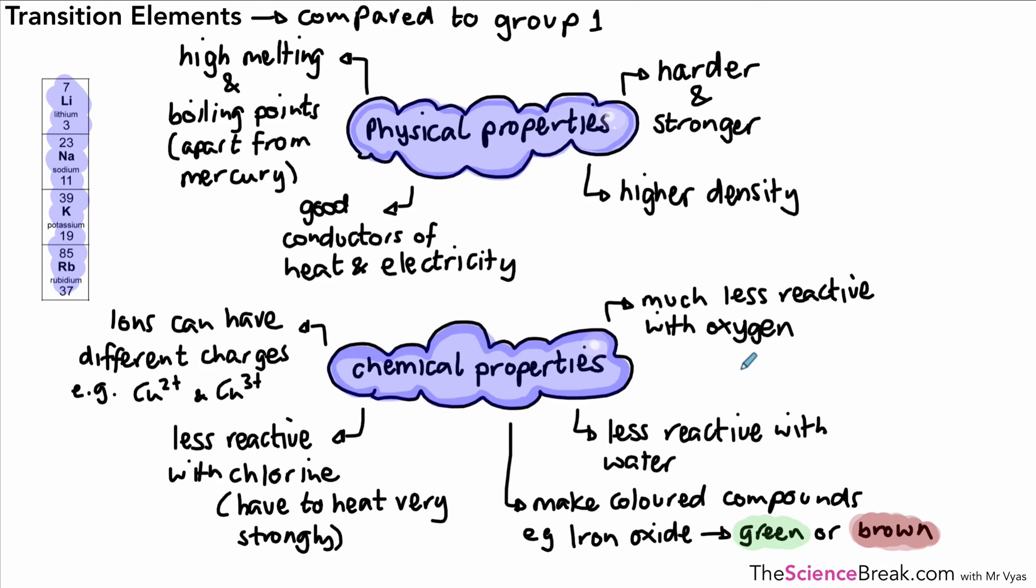The last point I want to make is that transition elements are often used as what we call catalysts. So a catalyst is a substance that can speed up a chemical reaction. It doesn't get involved in the chemical reaction, but it can speed up chemical reactions, and transition elements are often used for this purpose. There we go, and we can highlight that final point there. So transition elements, where they are on the periodic table, and some of the physical and chemical properties of those elements, especially compared to Group 1 elements. Thank you.